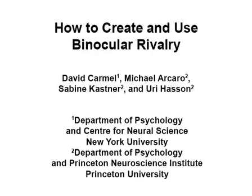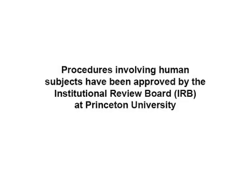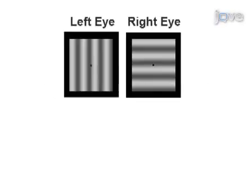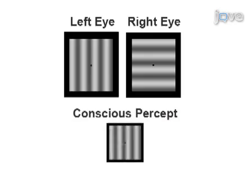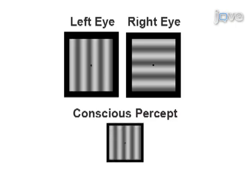Each of our eyes normally sees a slightly different image, and the brain combines these two images into a single coherent representation. However, when the eyes are presented with images that are sufficiently different from each other, a pattern of perceptual alternations transpires. One image dominates awareness while the other is suppressed. Dominance alternates between the two images, typically every few seconds. This perceptual phenomenon is known as binocular rivalry.